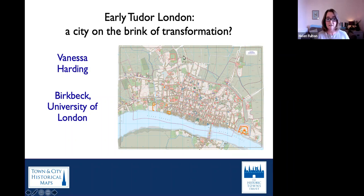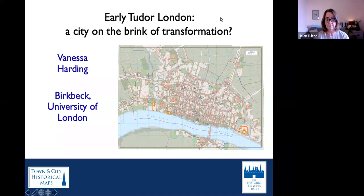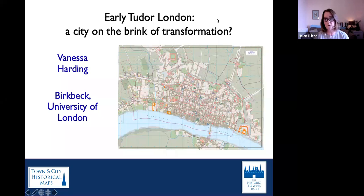Vanessa is very well known as a historian of medieval and early modern London. She's Professor of London History at Birkbeck University of London, and she's also a trustee and honorary secretary of the British Historic Towns Trust. Her research and writing focus on the social history of early modern London from about 1500 to 1700, especially on the family and the household, the environment, health and disease, death and burial. She contributed to the Historic Towns Trust maps of medieval London and London 1520, and she's currently developing a new project to map London on the eve of the Great Fire. So she's talking to us today about early Tudor London, a city on the brink of transformation.